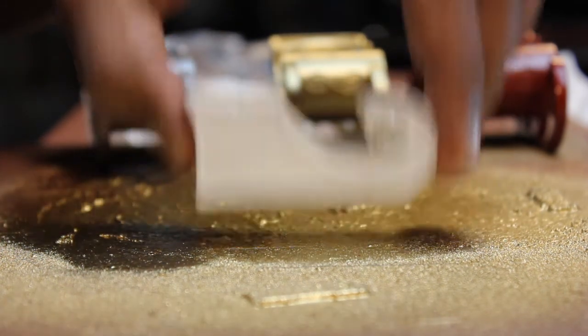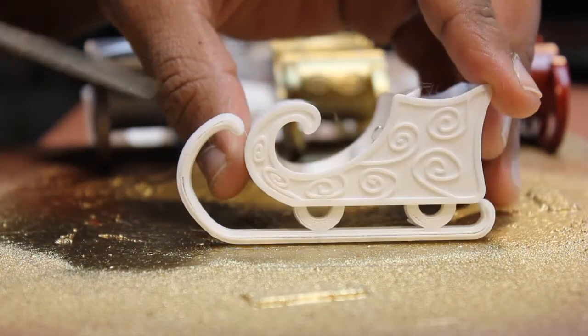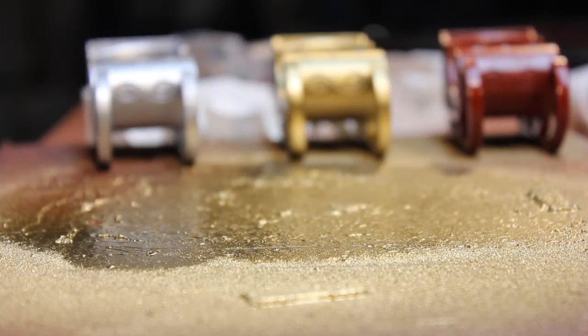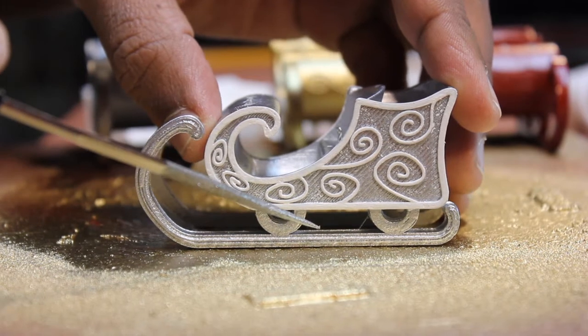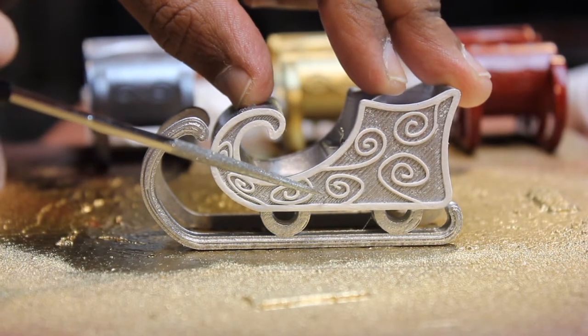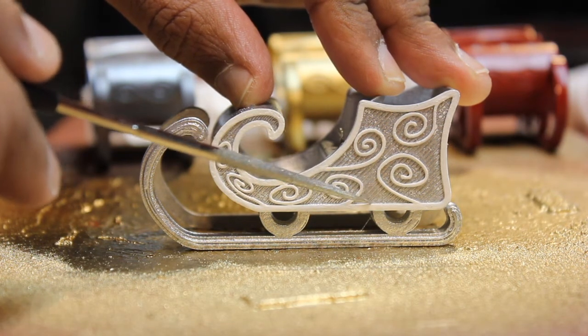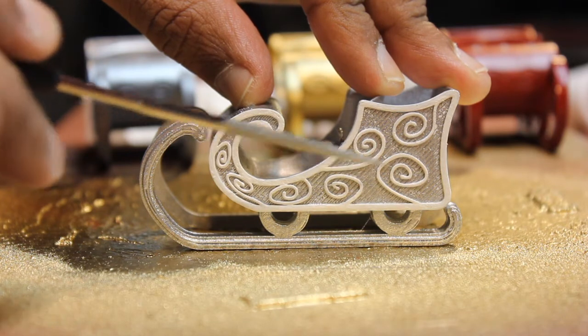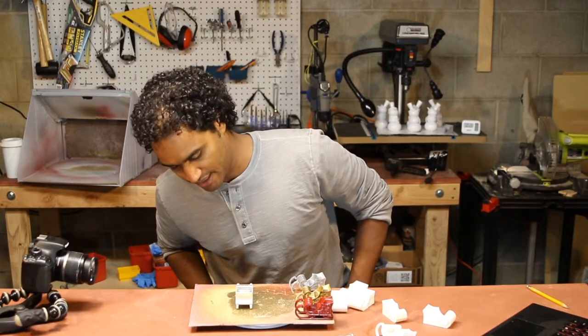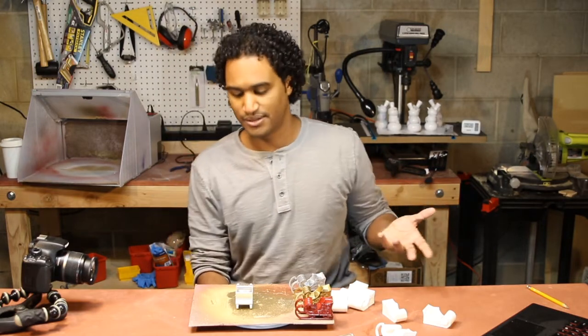The solution I came across was to design these little swirlies here, which solve two things. These will end up functioning as supports so that when you print this part, it wouldn't have a hard time bridging between the swirlies instead of bridging from one end to the other. In addition to providing supports and taking care of the design issue,